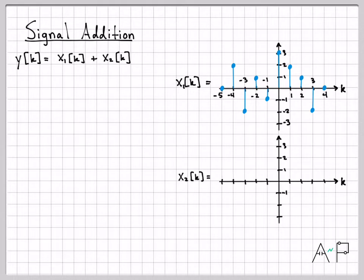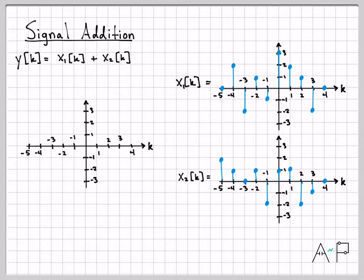Here is x2, the other signal that we'll be adding to x1. It looks like this. And then over here on the left, what we'll do is plot the new signal y[k] as we get each point.